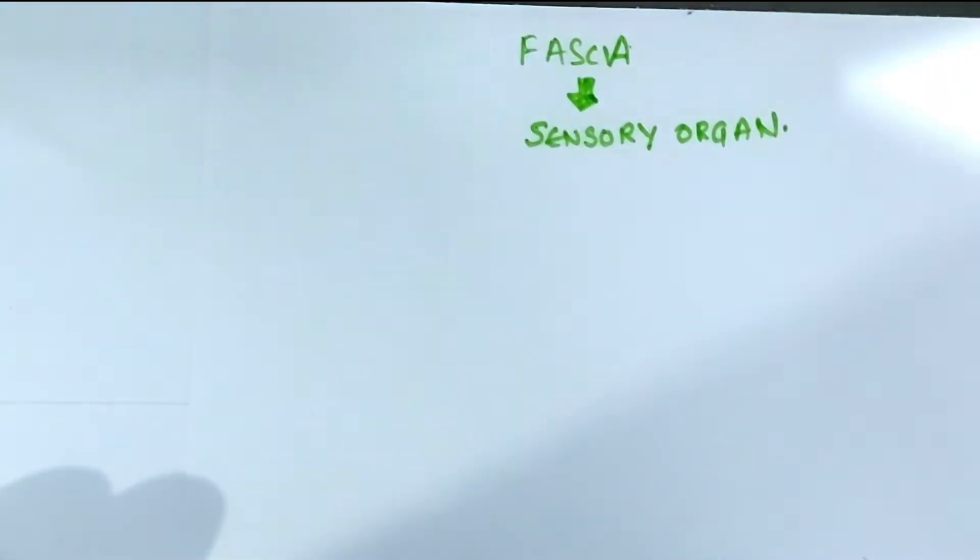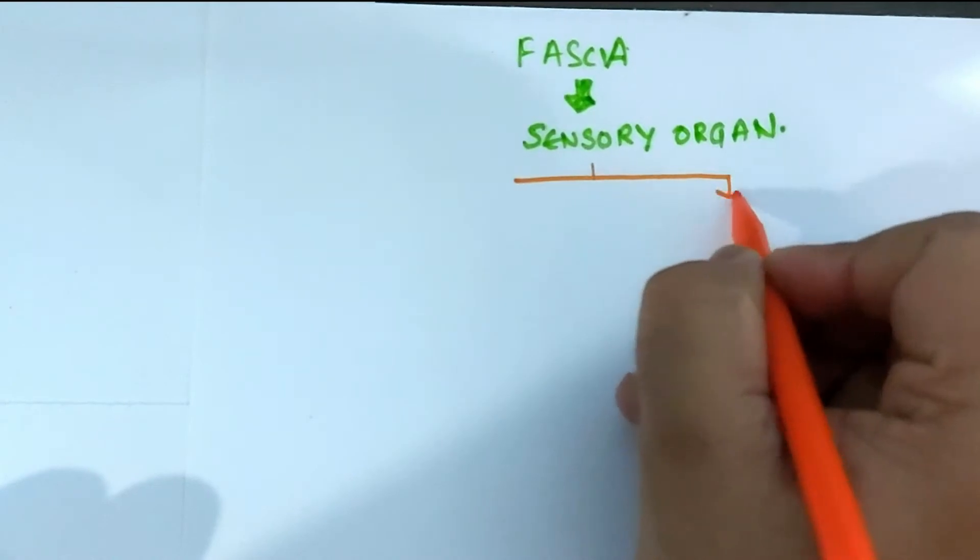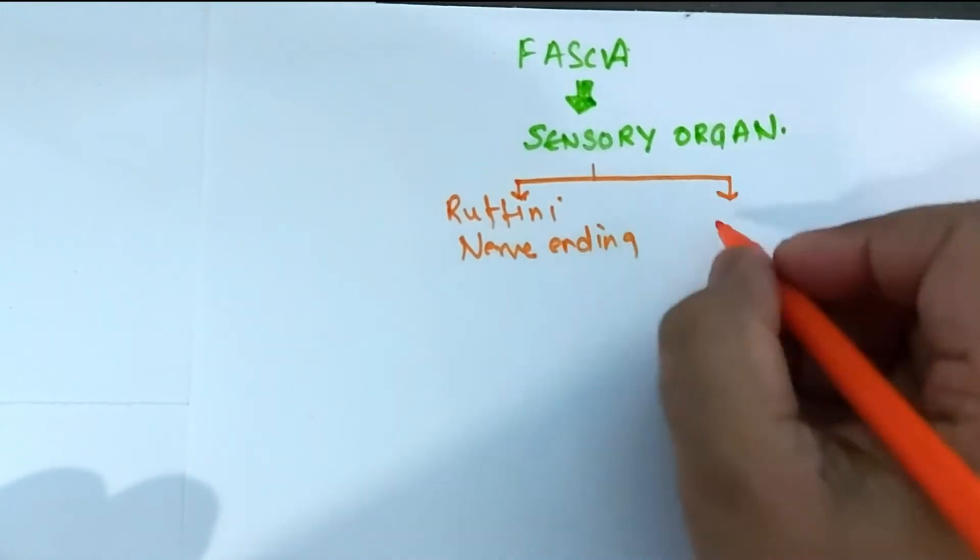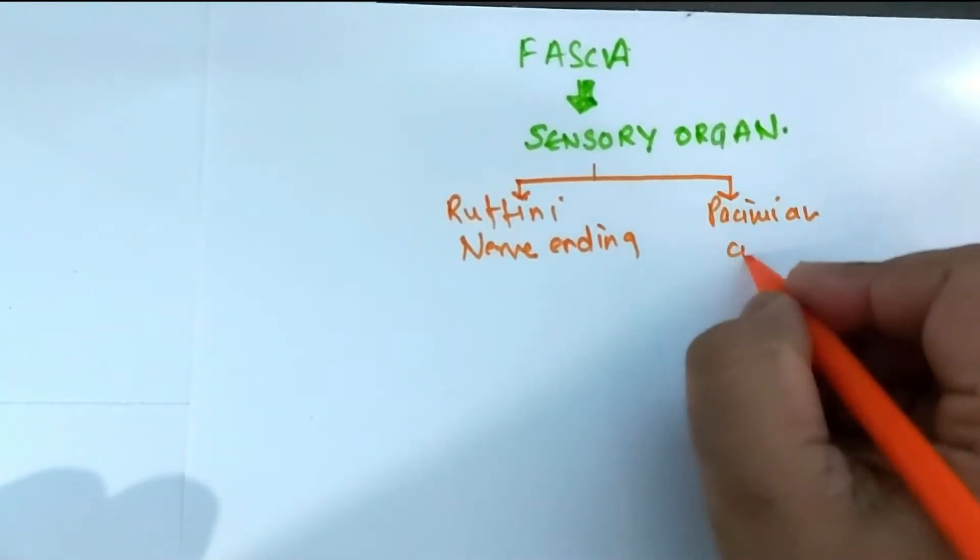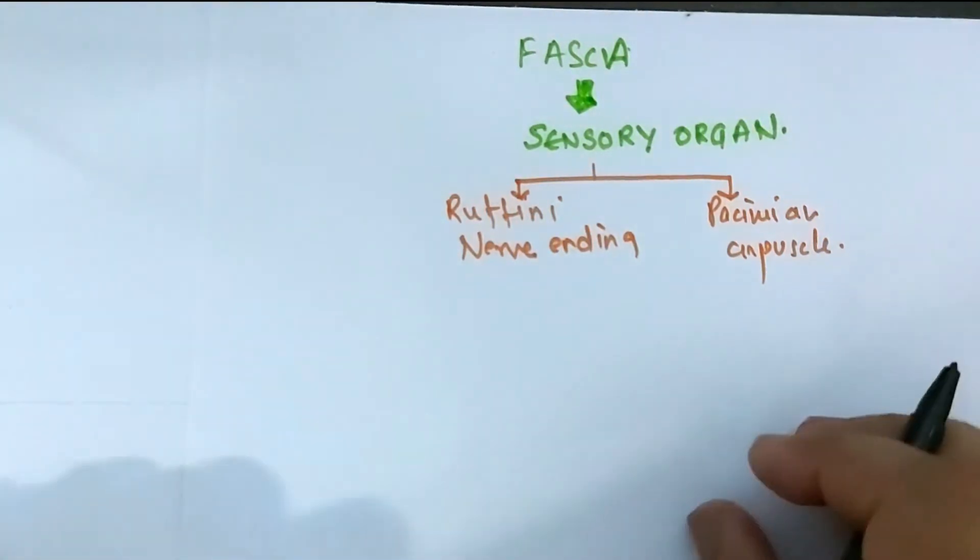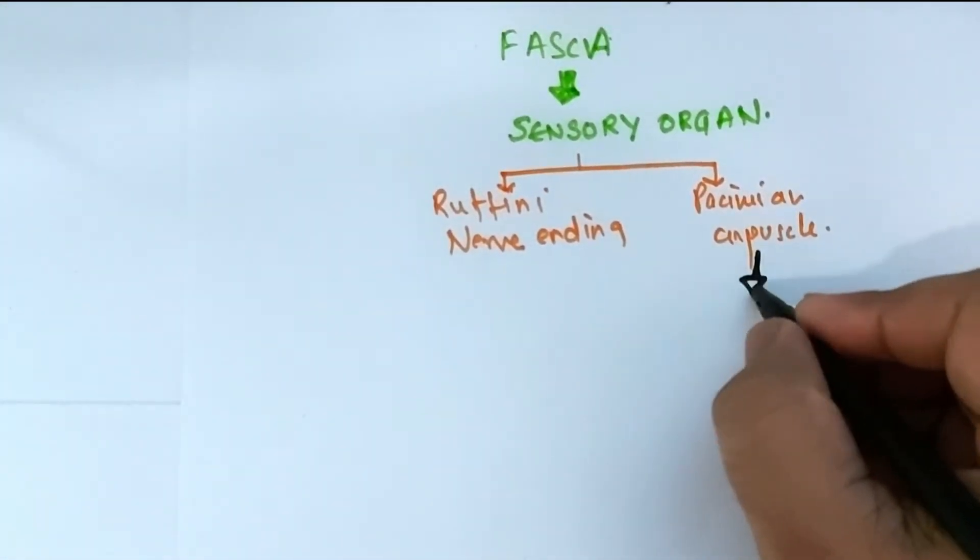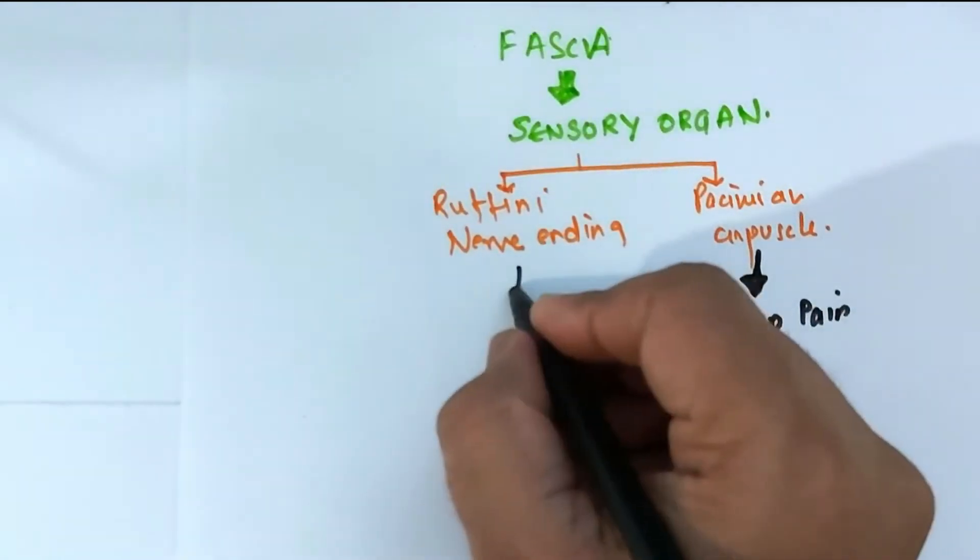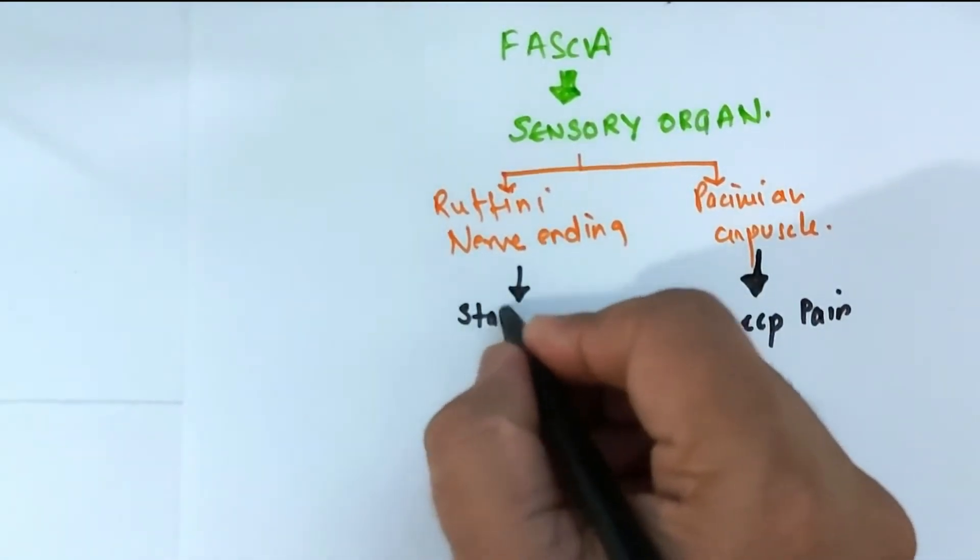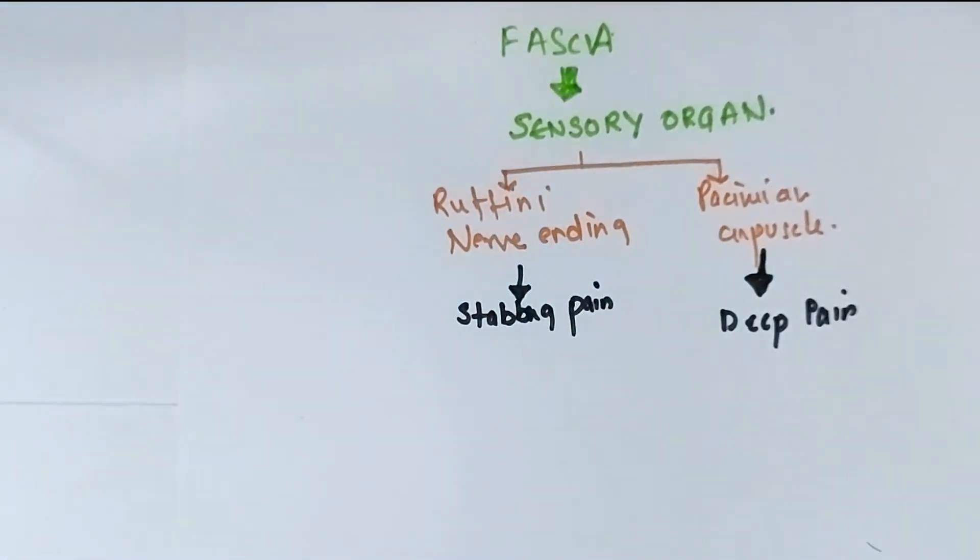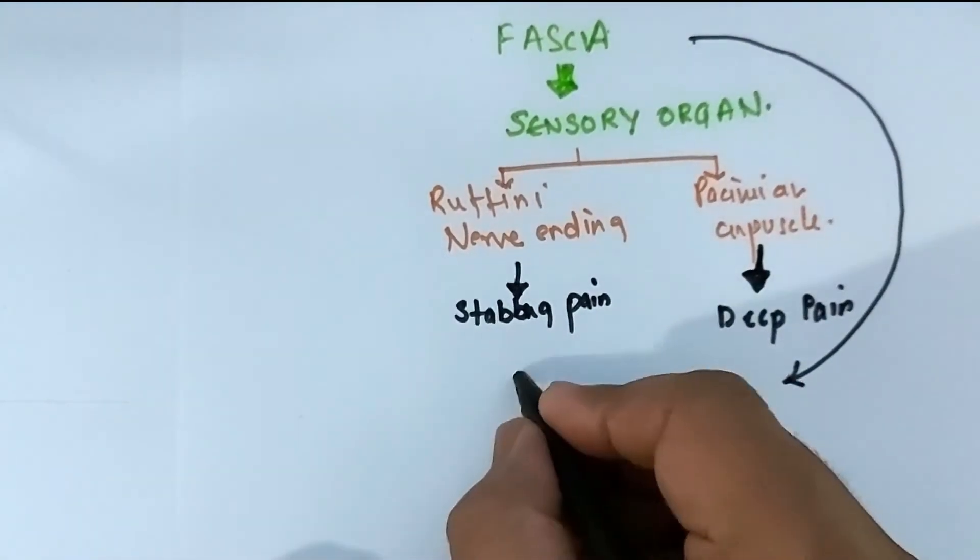Fascia is also a sensory organ. Researchers have found many sensory mechanoreceptors present in the fascia in the form of Ruffini nerve endings responsible for the stabbing pain and Pacinian corpuscle responsible for the deep pain in the patients. So fascia pain could either be deep in case of chronic or it could be a stabbing kind of pain in case of any acute or chronic condition.